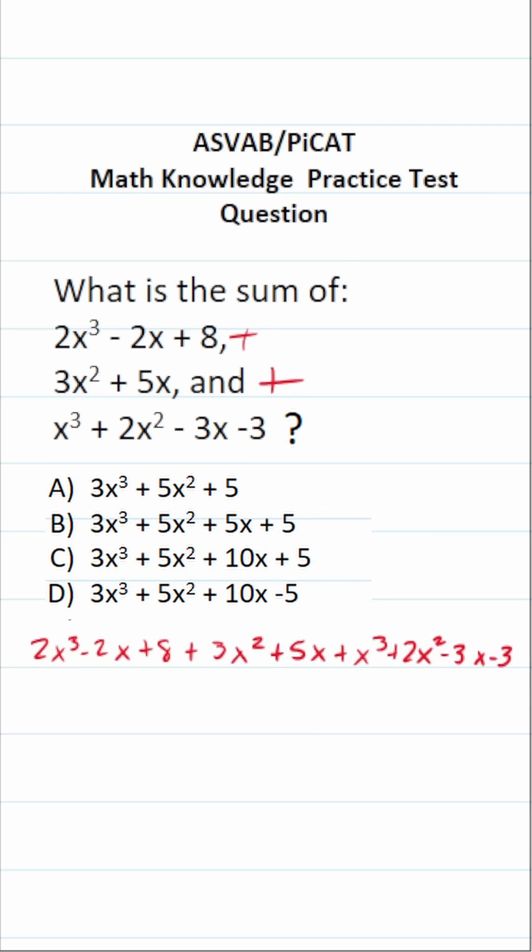Let's start with the highest power term first. Right here, we have 2x³. Its corresponding like term is going to have x raised to the third power, which is right here. So 2x³ + x³—you can put a 1 in front of x³ to make it clearer.